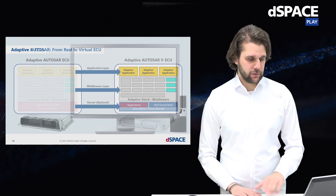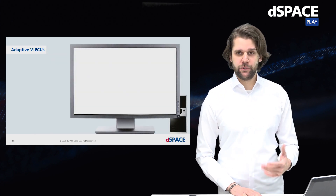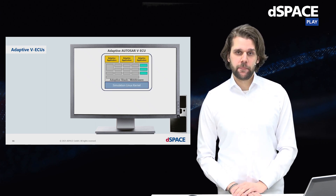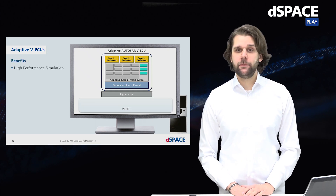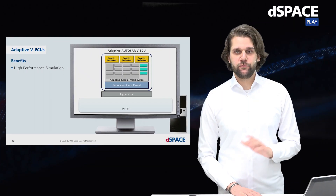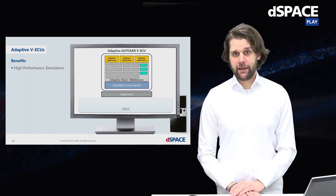Now we want to simulate this virtual ECU on our computer. We make use of a hypervisor, so we can boot the virtual ECU as a virtual machine on our simulation computer. This gives a performance increase because we use a hypervisor instead of emulation. You do not have to worry about creating and managing these virtual machines — our tool, VEOS, will handle this for you.